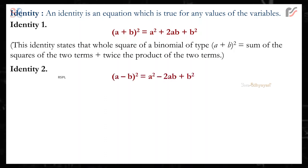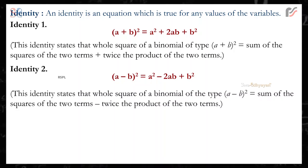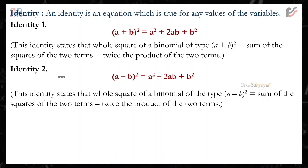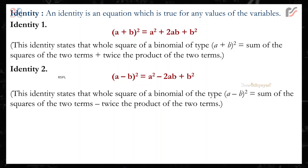Identity 2: (a − b)² is equal to a² − 2ab + b². This identity states that the whole square of a binomial of the type (a − b) is equal to the sum of the squares of the two terms minus twice the product of the two terms.